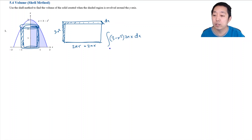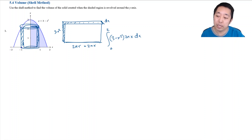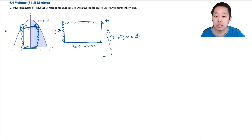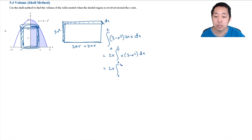I want to compute the volume by integrating all the shells from 0 to 2. I don't need to go from negative 2 to 2 because that would double-count rectangles — going from 0 to 2 encompasses the entire volume. So this is just 2π times the integral from 0 to 2 of x(3 minus x squared) dx. I'll distribute to get 3x minus x cubed dx.